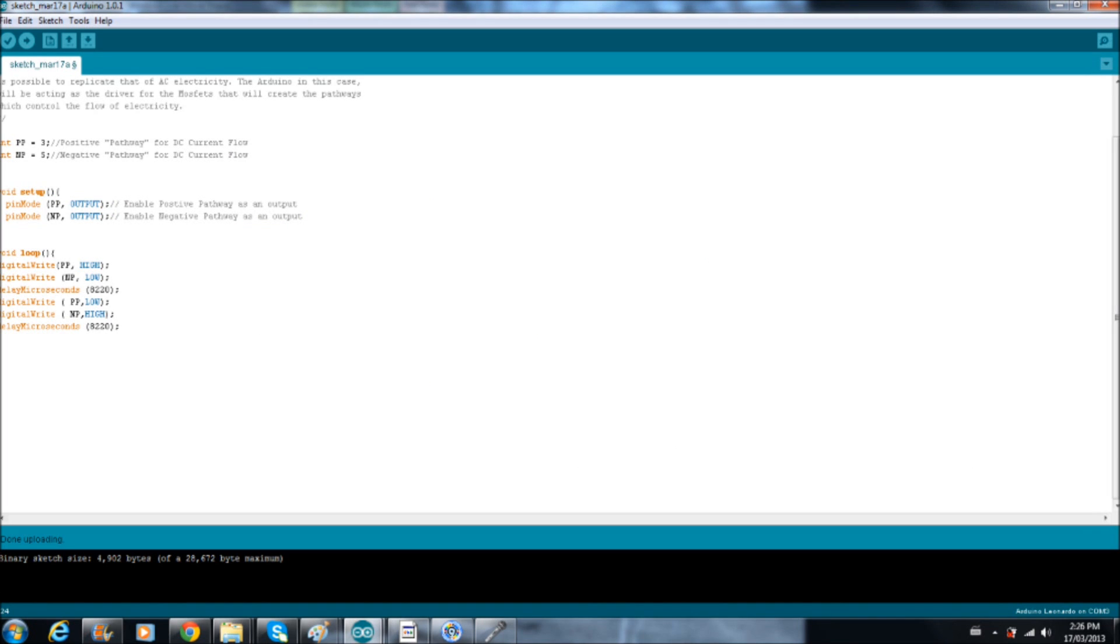Now in order for this circuit to work, it's a really simplistic approach. All we need to do is have one side of the circuit enabled and the other side disabled, and we do that by just writing digital high or digital low.